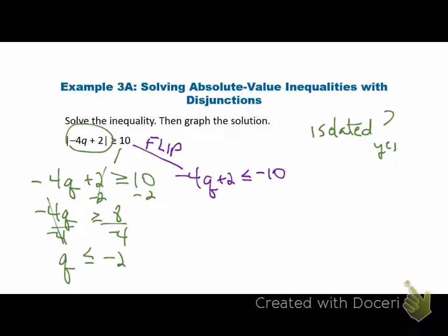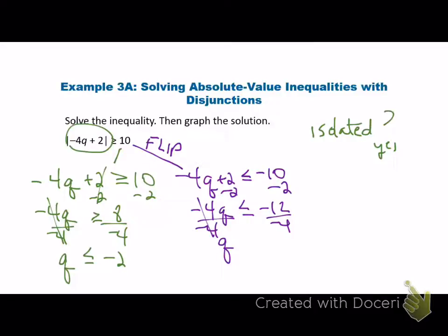Now let's come over and do our purple one. Same steps. We're going to subtract the 2, so we get negative 4Q less than or equal to negative 12. And then we're going to again divide by the negative 4. Again, when we divide, what do we do? Flip. So it gets flipped to greater than or equal, and that would be a positive 3.